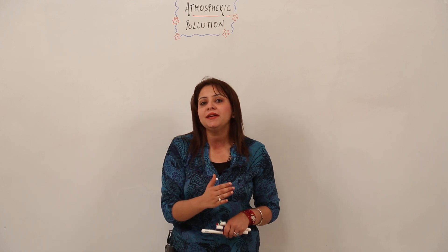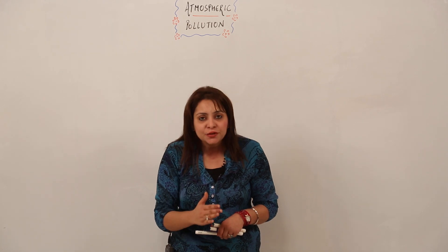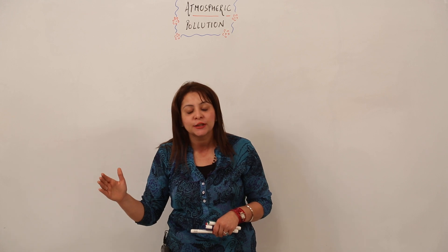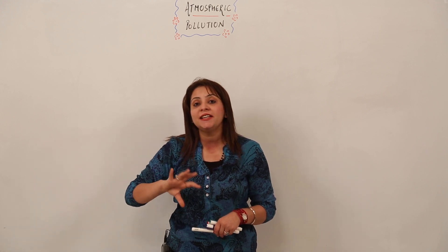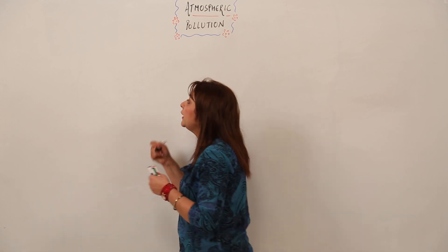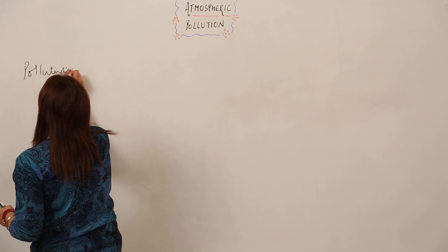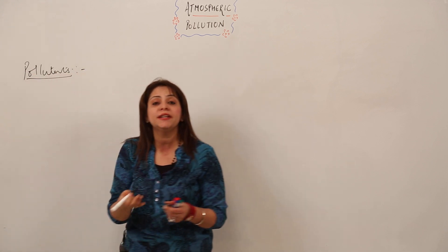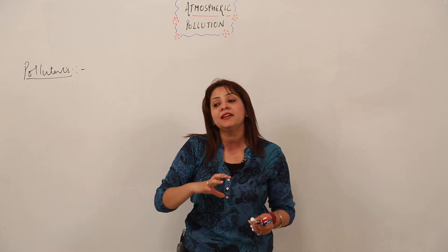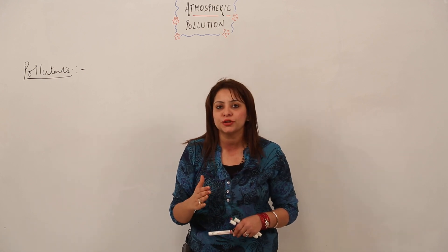So write down in your copies: atmospheric pollution is the contamination of air with harmful and undesirable substances. These undesirable substances which are present in the atmosphere and which are harmful to us are called pollutants. There are many pollutants found in the atmosphere that are polluting the air, meaning they are undesired and in some way harmful to us.